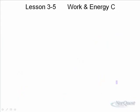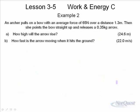Let's look at an example of elastic potential energy. We'll talk about an archer pulls on a bow with an average force of 65 newtons over a distance of 1.3 meters. She then points the bow straight up and releases a 0.35 kilogram arrow. How high will the arrow rise, and how fast is the arrow moving when it hits the ground? This is a fairly complex question. Here are the two solutions. What you may like to do, if you're feeling confident, is see if you can figure these two answers out on your own. Stop the tape and try these. If you're not feeling overly confident, you might want to watch the example, but it's a good idea to try it on your own. The answers are there, and if you get it right, then you can move on.